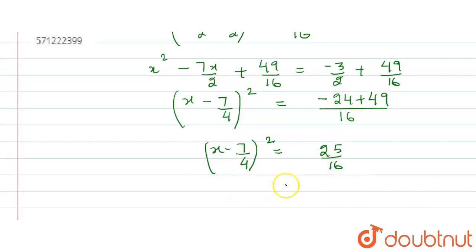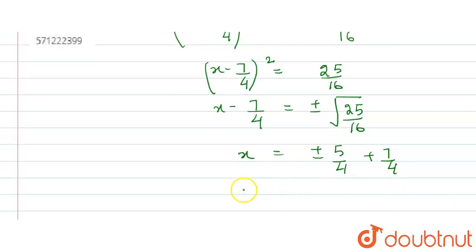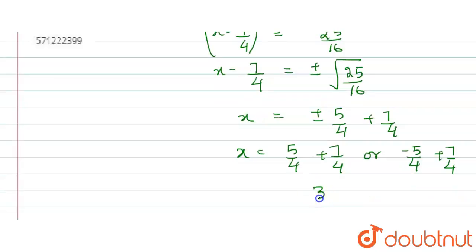Taking the square root: x minus 7/4 equals plus or minus √(25/16) = plus or minus 5/4. Taking minus 7/4 to the right hand side gives x = 5/4 + 7/4 or x = minus 5/4 + 7/4. After simplification, the two roots are x = 3 or x = 1/2. Now moving on to the second part.